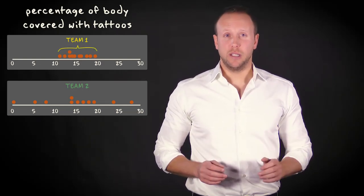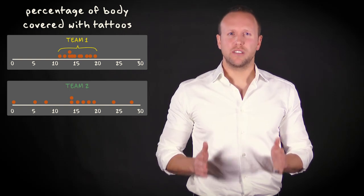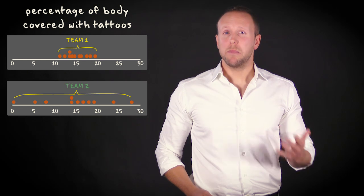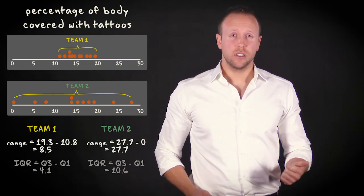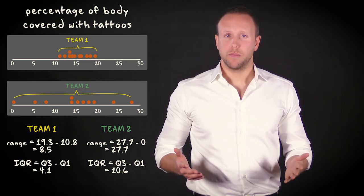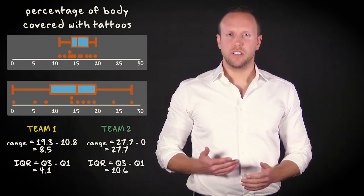You can see immediately that in the first team, the tattoo density is much less variable than in the second team. This variability can be measured by, for instance, the range or the interquartile range. It can graphically be represented by a boxplot. You can see the relevant boxplots here.